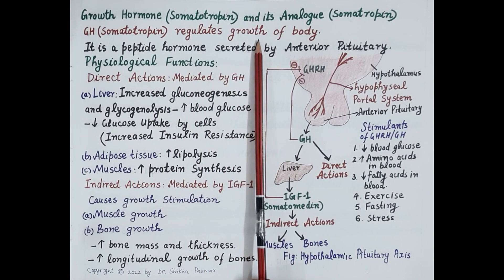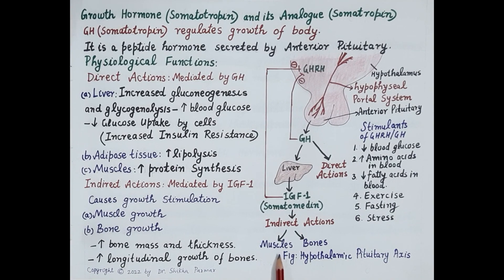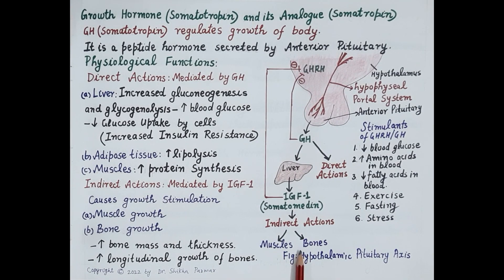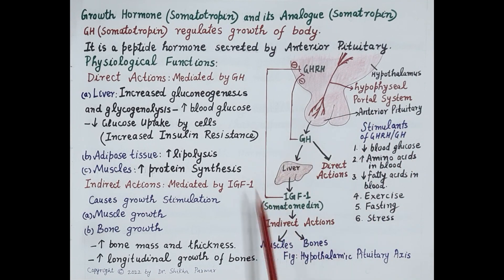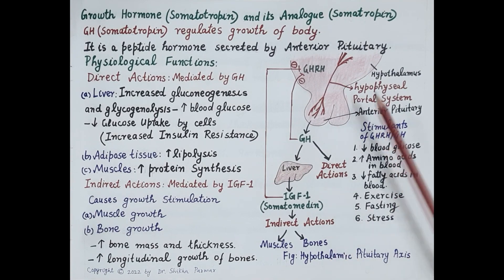Growth hormone plays a very important and fundamental role in the growth of skeletal muscles and bones during puberty and throughout life. Excess secretion of growth hormone during childhood can cause an abnormal increase in height, while its deficiency can produce dwarfism. This figure explains the regulation of secretion of growth hormone.